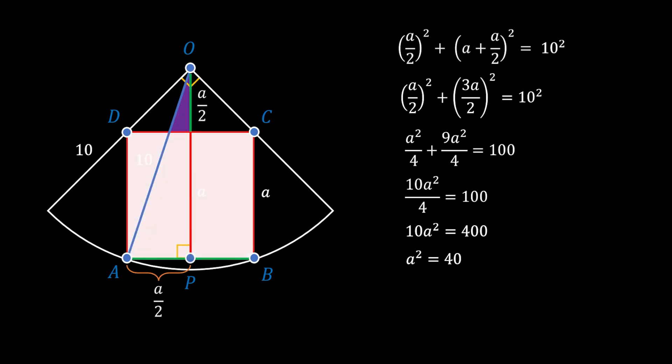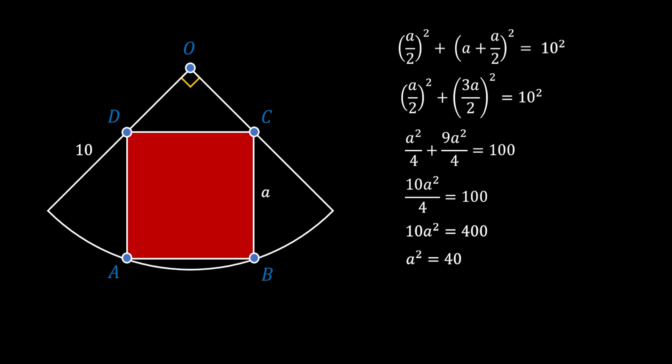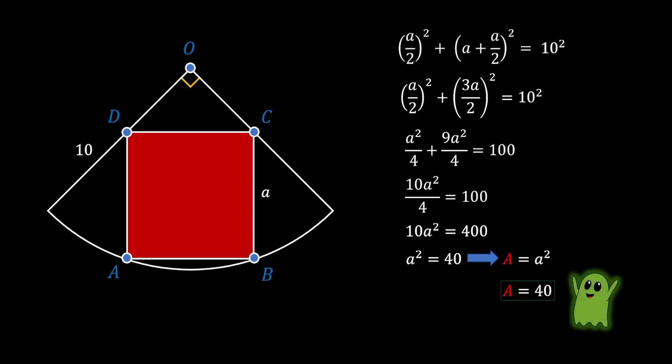Since we are looking for the area of the red square with side A, that means the area of the square equals A². We already found that value, so plugging it in: the area of our red square is equal to 40 square units, and this is our solution.